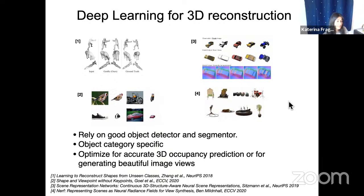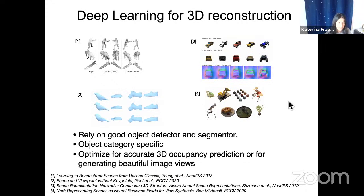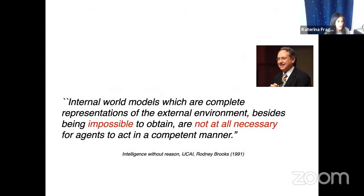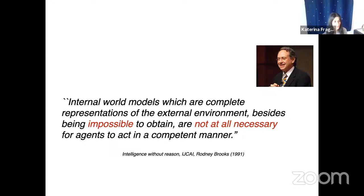These questions are open. Here we have Rodney Brooks, who back in 1991, when deep learning was not big, said that such 3D reconstructions — complete representations of the external environment — are both hard to get but also not necessarily needed for the end task. The end task is to make agents that act competently in the world. So the question is: how much 3D do we need versus 2D? What do we need to capture and what don't we need?